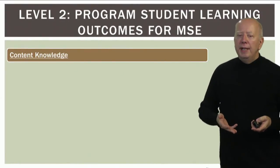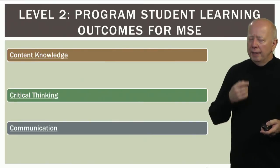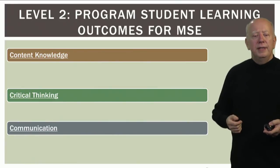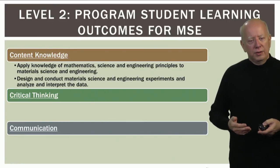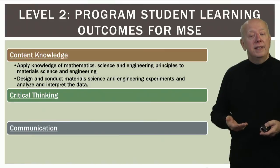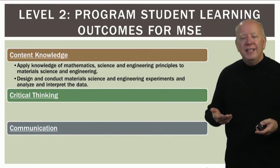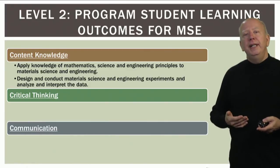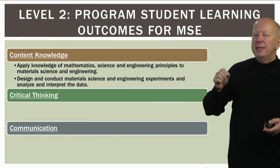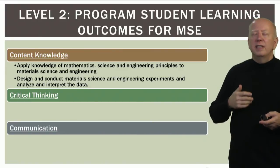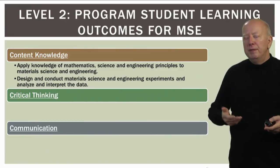The student learning outcomes for the Materials Science and Engineering program mirror the academic learning compact directly. With the three categorical designations for undergraduate programs — content knowledge, critical thinking, and communication — here are their content knowledge SLOs: 'To apply knowledge of mathematics, science, and engineering principles to material science and engineering,' and 'to design and conduct materials science and engineering experiments, and analyze and interpret the data.' These have many active verbs and will be easily measured because application, design, conducting experiments, and analysis of data are all observable and measurable actions.